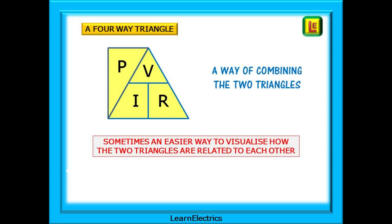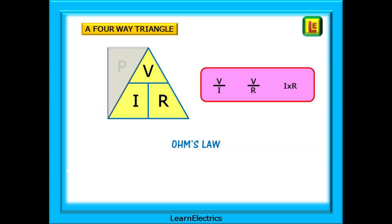We could combine the two triangles to make one modified triangle that incorporates all four variables, and this is how I visualize Ohm's Law and Power Law. They are, after all, related. If we ignore the P for power, we have the basic Ohm's Law triangle.